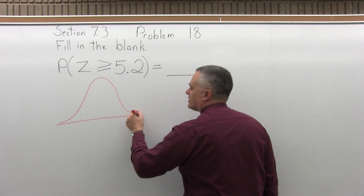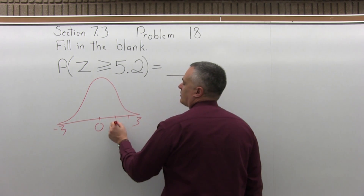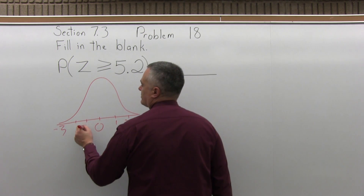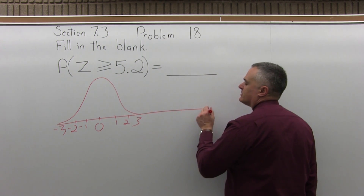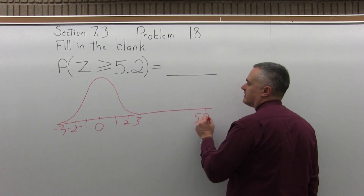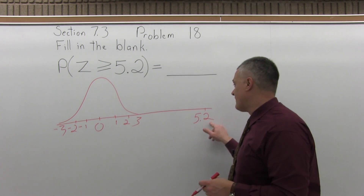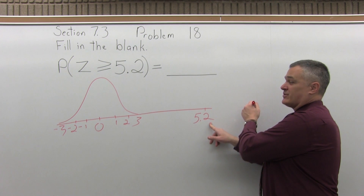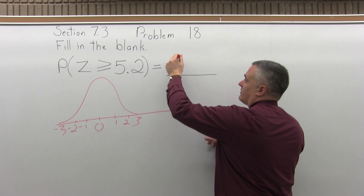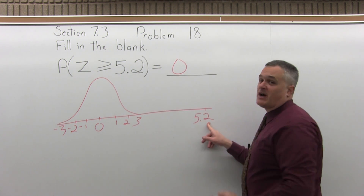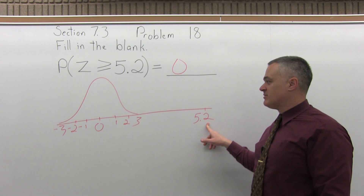If you start with your regular bell curve, 0 in the middle, 3 on one end, negative 3 on the other, with 1, 2, 3 and minus 1, minus 2, minus 3 marked — that 5.2 is way out here. You want the probability that it's bigger than 5.2, so you are so far away from the rest of the bell curve that the probability of being even bigger than 5.2 is pretty close to 0 with any sensible round off.